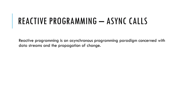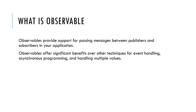So what exactly is reactive programming or asynchronous calls? Reactive programming is an asynchronous programming paradigm concerned with data streams and the propagation of changes. An Observable provides support for passing messages between a publisher and a subscriber in an application, offering significant benefits over other techniques for event handling, asynchronous programming, and handling multiple values.